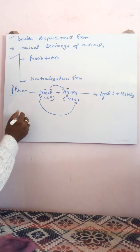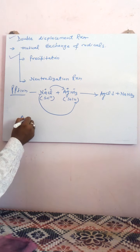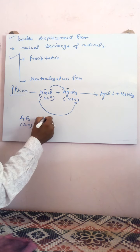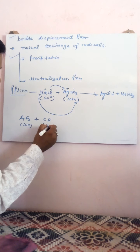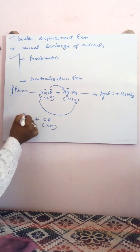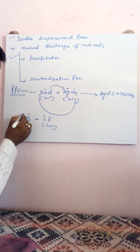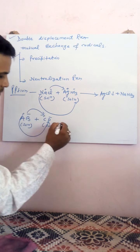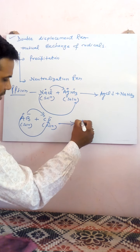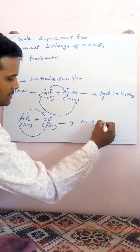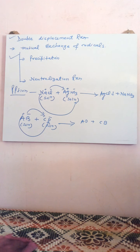In a general way, suppose we have AB in solution form plus CD in solution form. If we consider the charges over the ions as plus, minus, plus, minus — then plus goes with minus and minus goes with plus — the resultant we get is AD plus CB. This is called double displacement reaction.